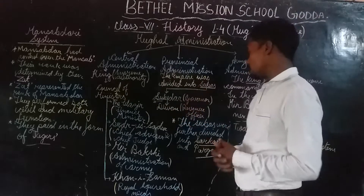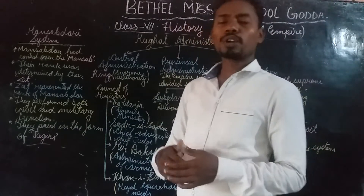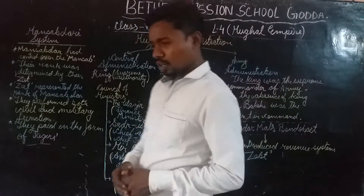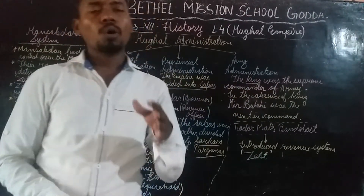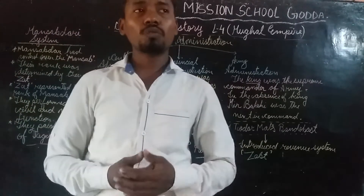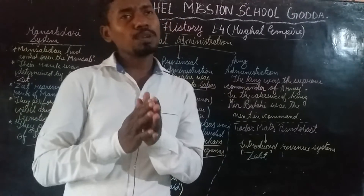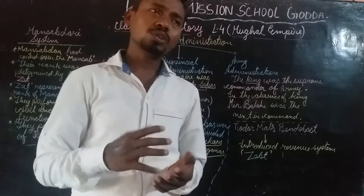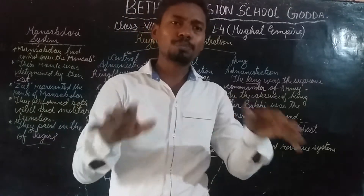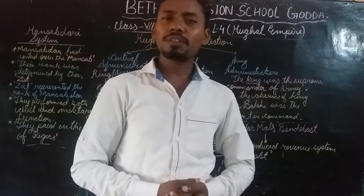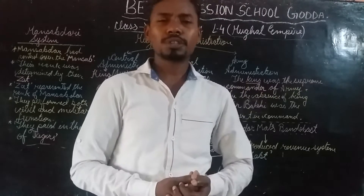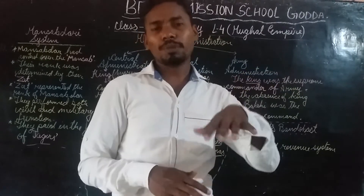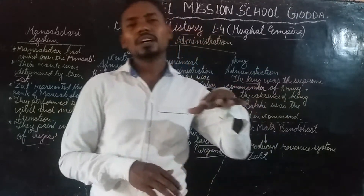The head chief of the suba was the Subedar, who was the governor of the suba. He also had some assistants to help him function, and the most important of these was the Diwan. The Diwan was the revenue officer. Any government runs only if it has a sufficient amount of money, and money is received through taxation. The rulers always take taxes from the people governed by them — just as nowadays your parents might be giving taxes, about 30% of their income.